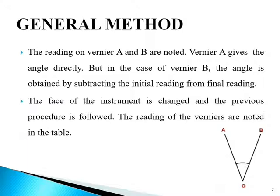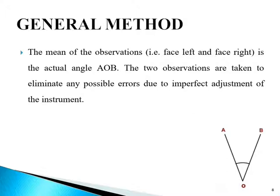Next, the face of the instrument is changed and the previous procedure is followed, and the readings of the Verniers are noted in the table. The mean of the observations — face left and face right — is the actual angle AOB. The two observations are taken to eliminate any possible error due to imperfect adjustment of the instrument. This completes the general method.